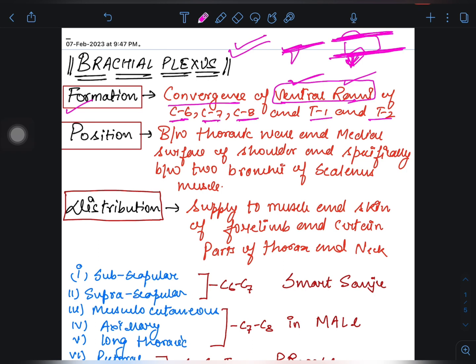Now let's talk about position. Position is between thoracic wall and medial surface of shoulder, and specifically between two branches of scalenus muscle. Distribution: supply the muscle and skin of forelimb and certain parts of thorax.